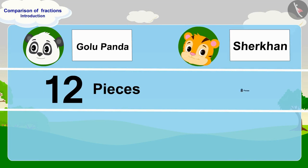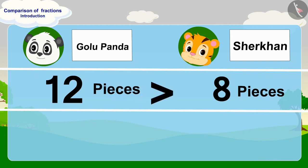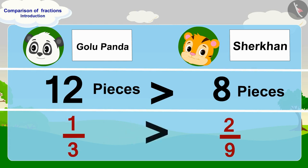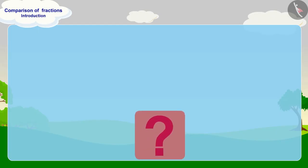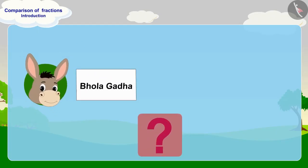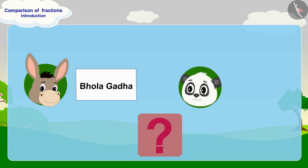Golu has written his name on 12 pieces and Share Khan has written his name on 8 pieces of paper. Therefore, Golu has written his name on more pieces of paper than Share Khan. We can also look at it this way: the fraction one-third is bigger than two-ninth.